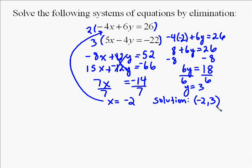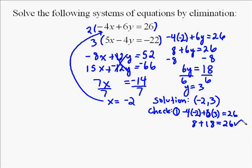Now we also can check. We want to do this after each system of equations problem just because it's so easy. It can really help us out. I put in negative 2 for x, 3 for y. You're going to have 6 times 3 is positive 26. Negative 4 times negative 2 is 8. 6 times 3 is 18. Yes, 8 plus 18 does equal 26.